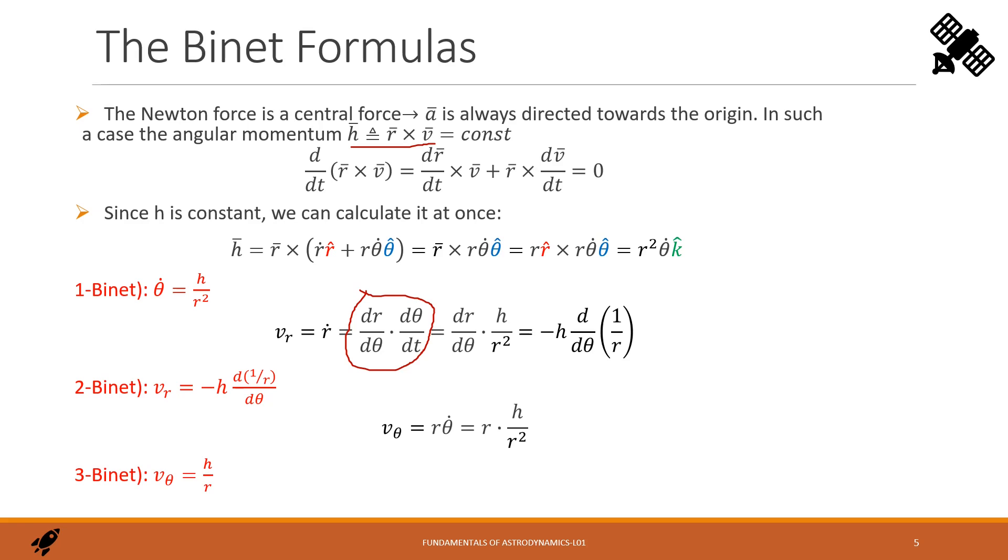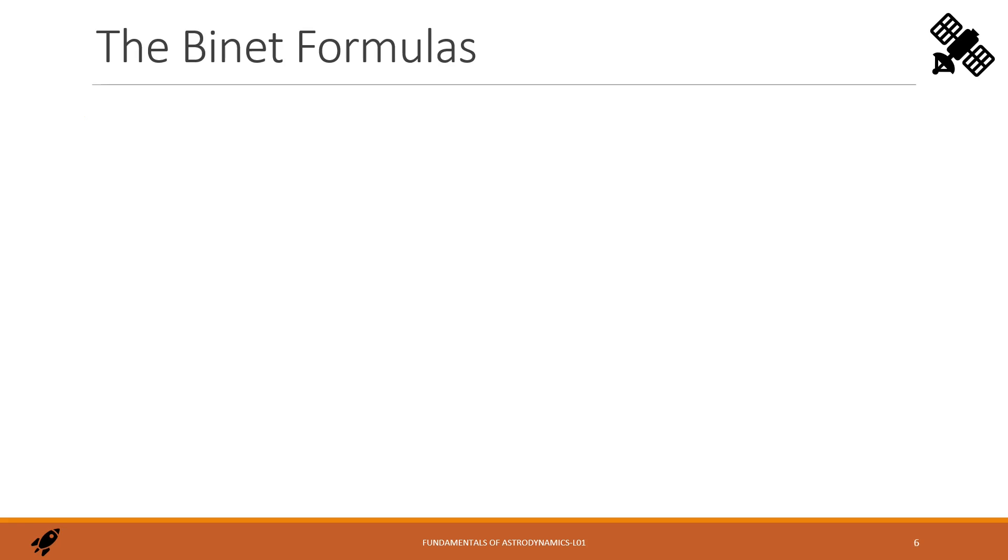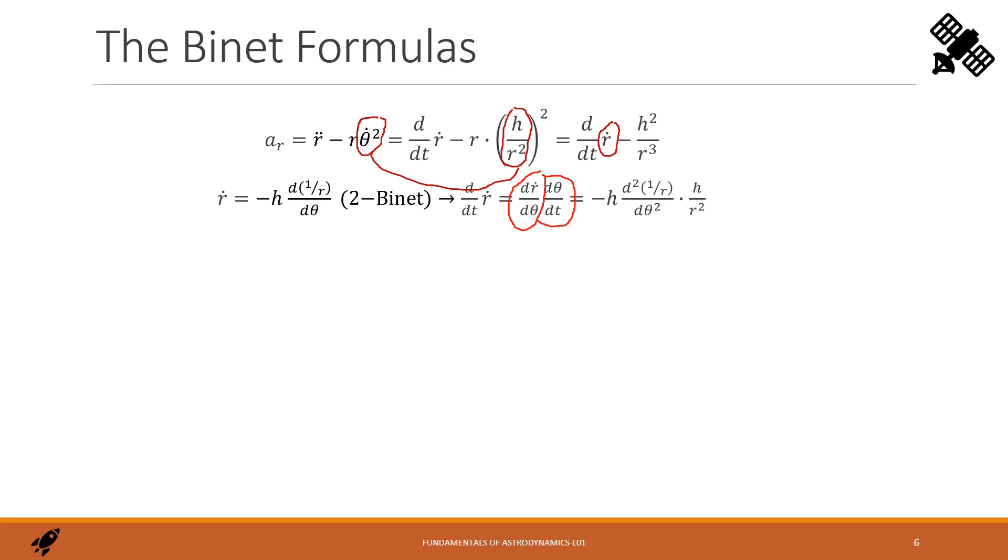The acceleration when central force is just radial. We have seen its expression at slide number four. And now we replace the expression of theta dot from the first Binet formula. And we introduce also the second Binet formula for the expression of r dot. Moreover, we split the derivative of r dot over time into derivative of r dot over theta times derivative of theta over time. That is once again the first Binet formula. All together we get this expression in red. That is the fourth Binet formula.